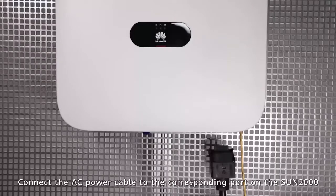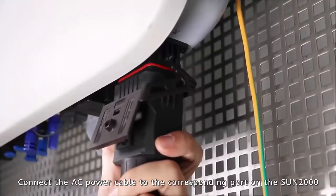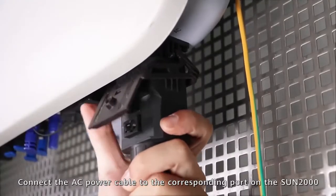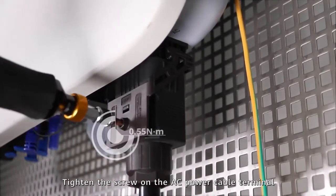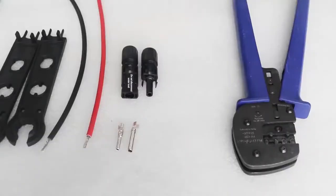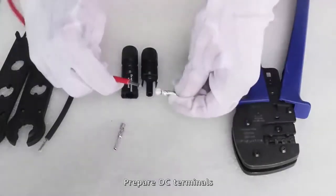Connect the AC power cable to the corresponding port on the SUN2000. Tighten the screw on the AC power cable terminal. Prepare DC terminals.